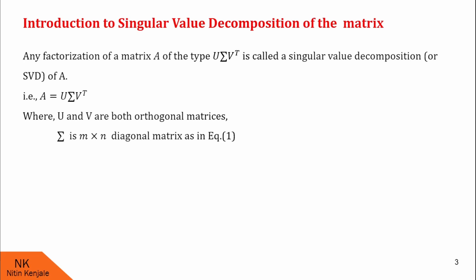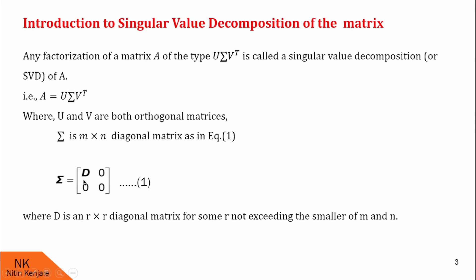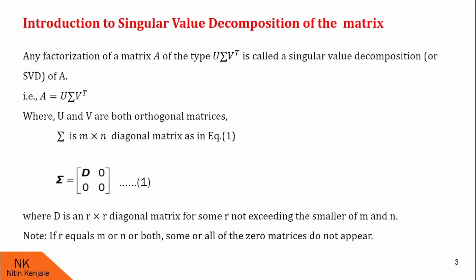Sigma is an M cross N diagonal matrix as shown in equation number 1. Here D is an R cross R diagonal matrix for some R not exceeding the smaller of M and N, where M is the number of rows of A and N is the number of columns of A. Note that if R equals M or N or both, some or all the zero matrices do not appear. That means if the order of D is the same as M or N or both, then sigma is simply the diagonal matrix D.